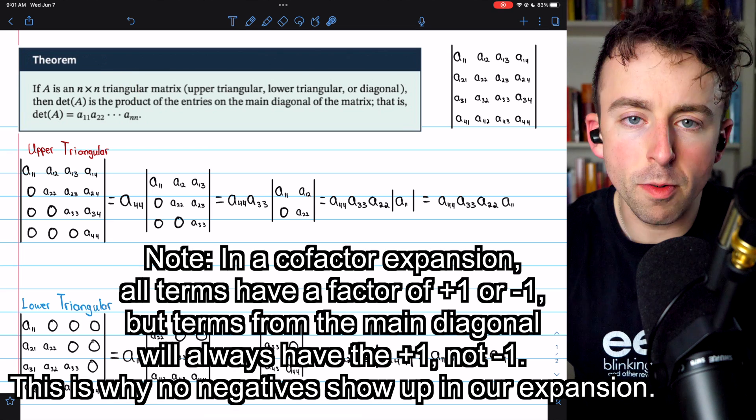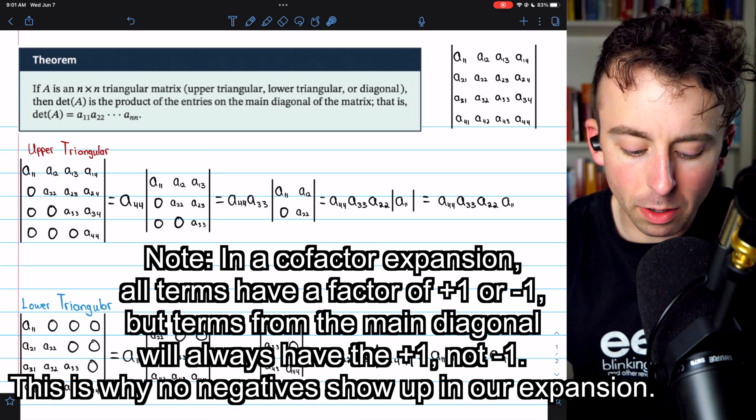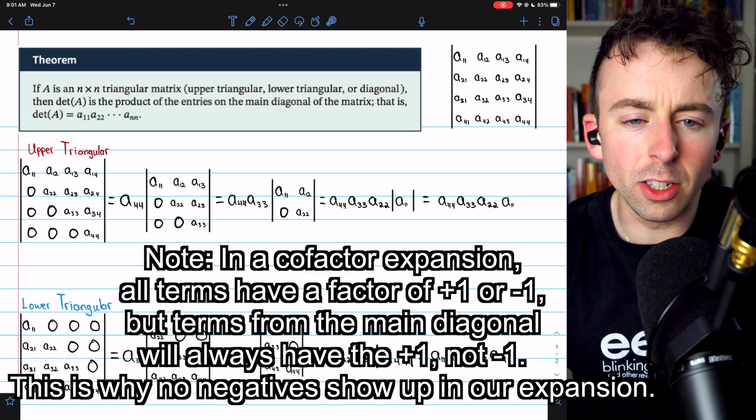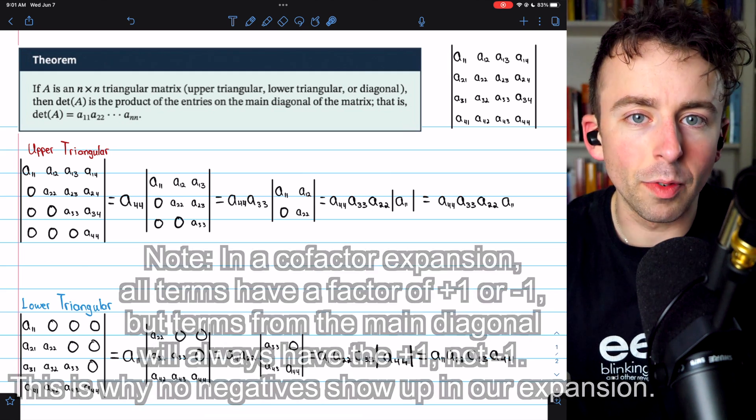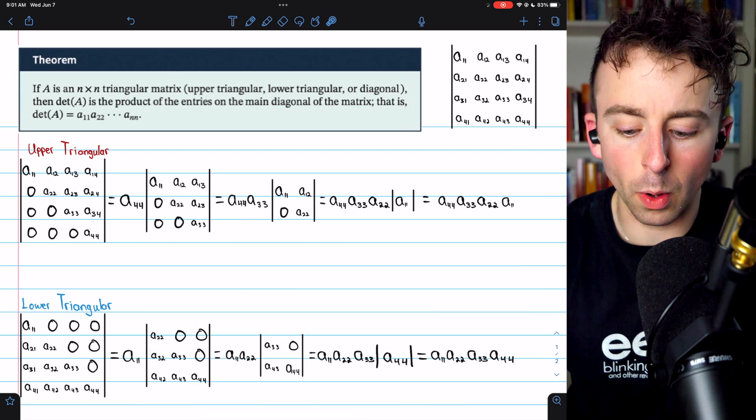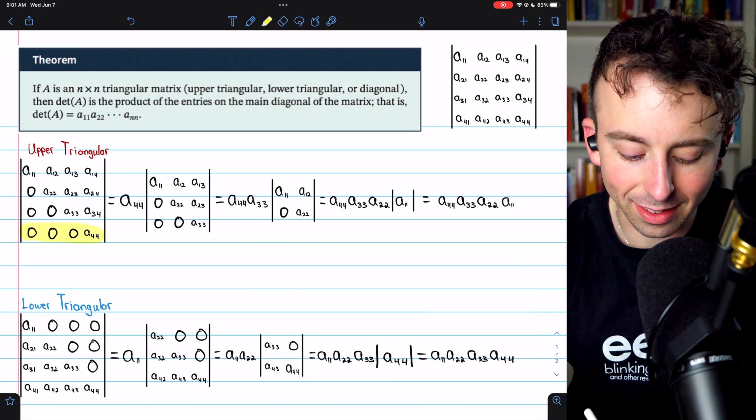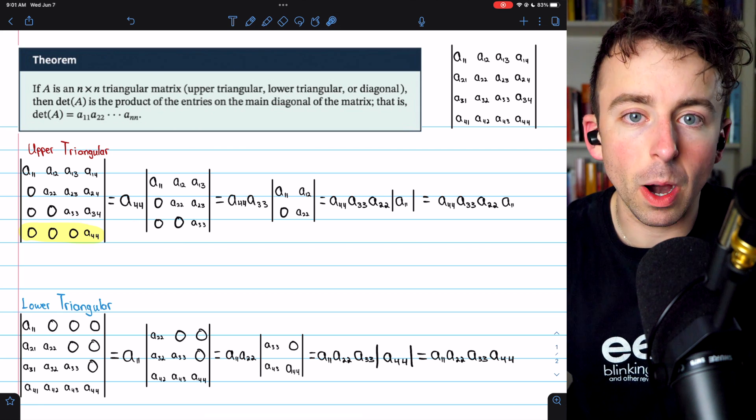We'll do some examples applying this theorem to triangular matrices in a minute, but let's first see why it's true. Here is a general example of an upper triangular matrix. What is the determinant of this matrix? Well, we could calculate it using the cofactor expansion of any row or column. This bottom row has all zeros except for the last entry, so that'll be easy. Let's do the cofactor expansion of that row.